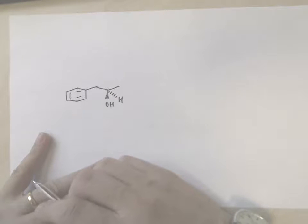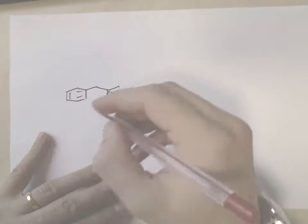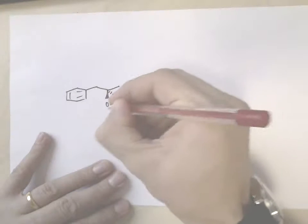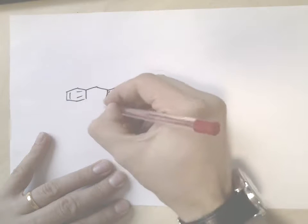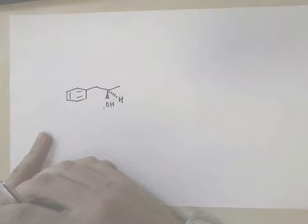So how do we prioritize them? Well, remember the first thing we do is look at atomic number. Oxygen has a higher atomic number than both carbon and hydrogen, so we say that the oxygen has priority one.